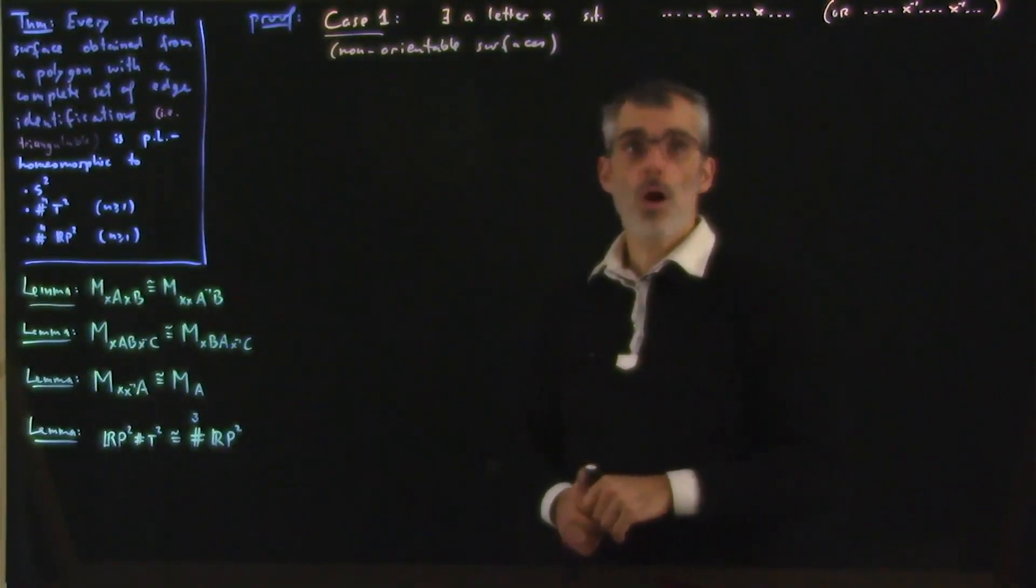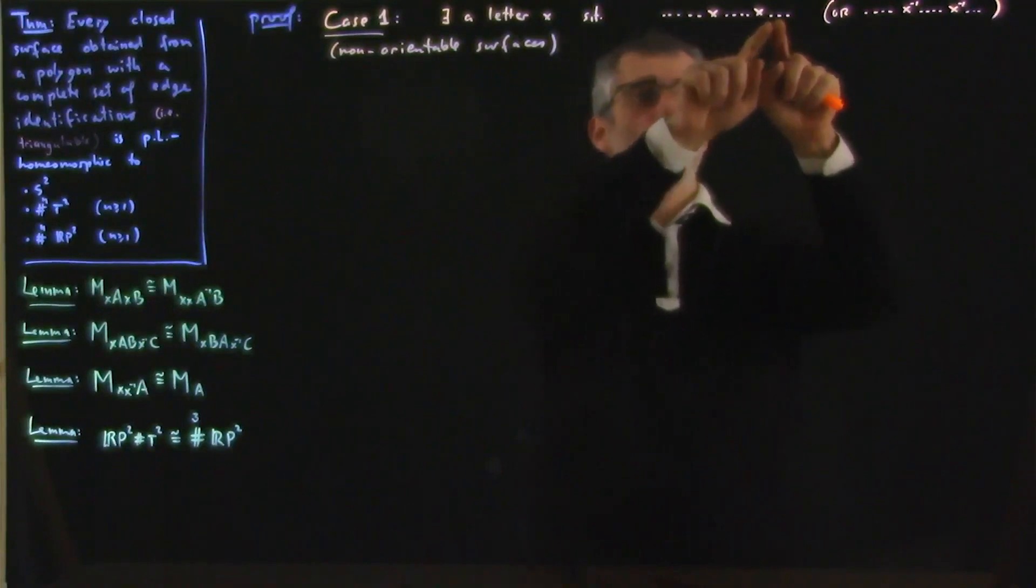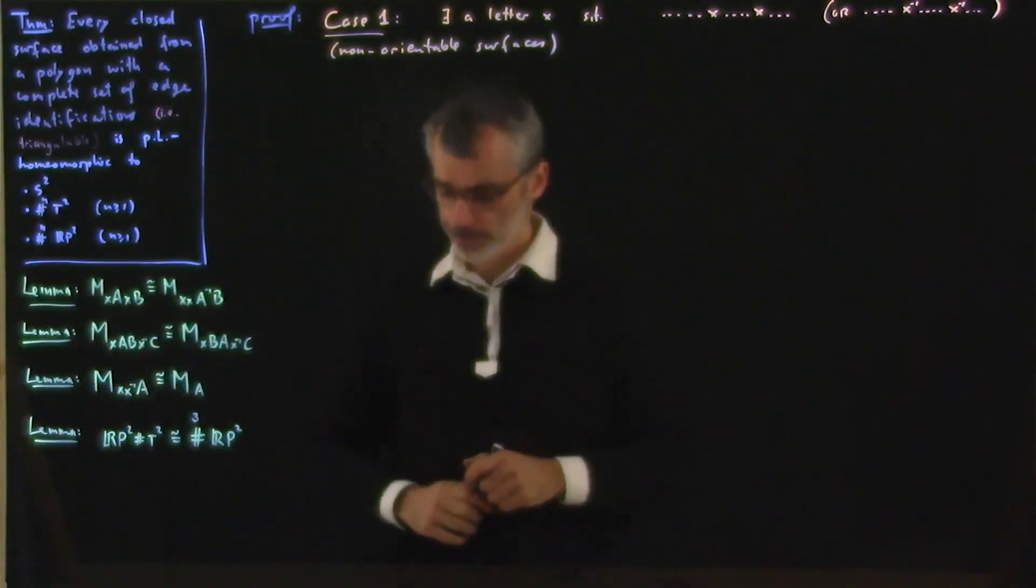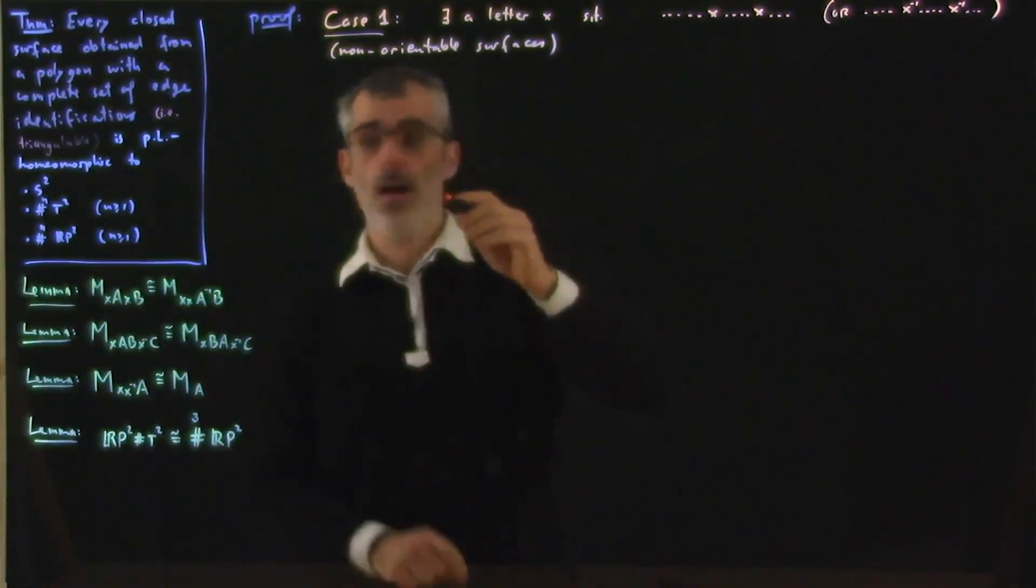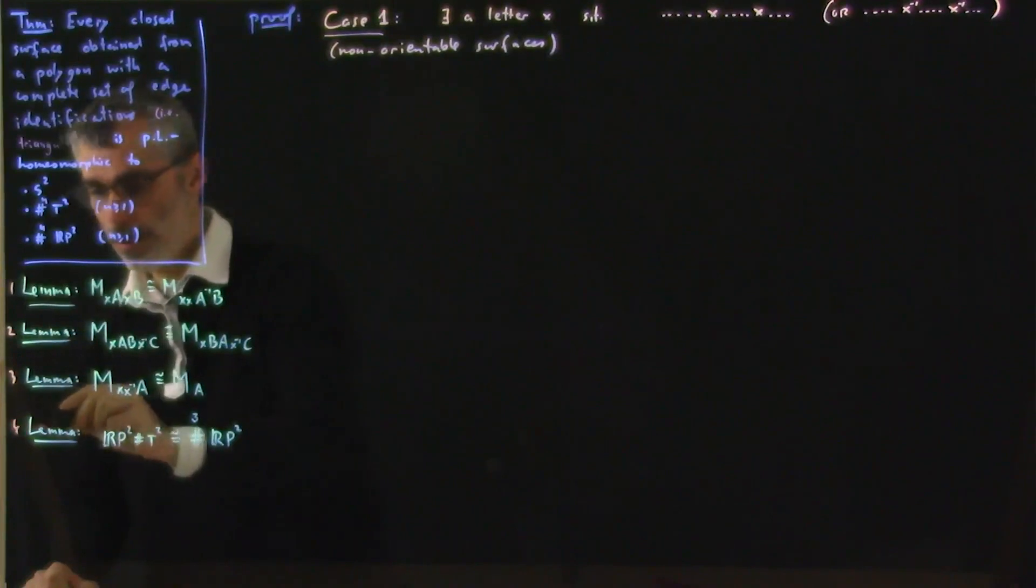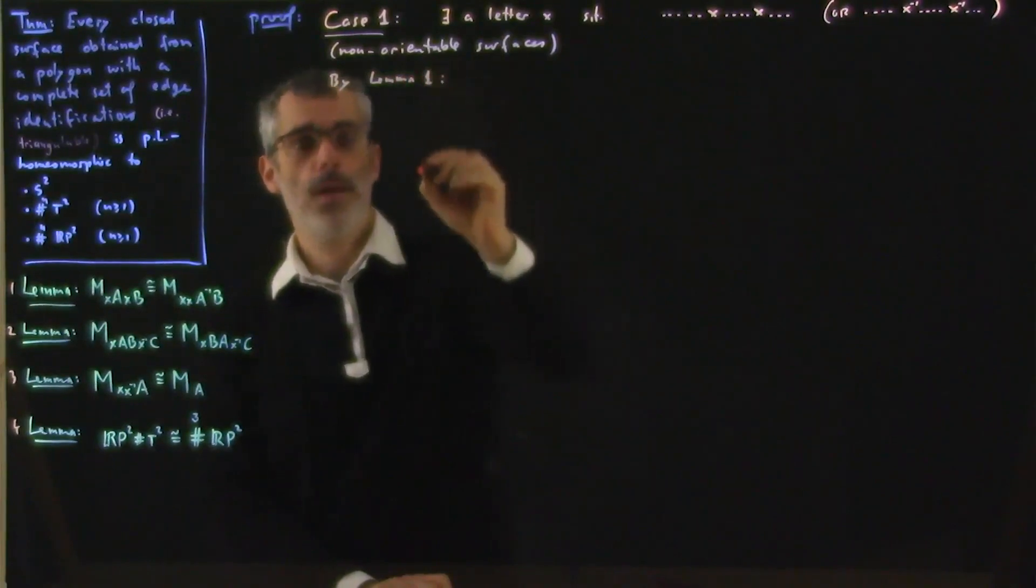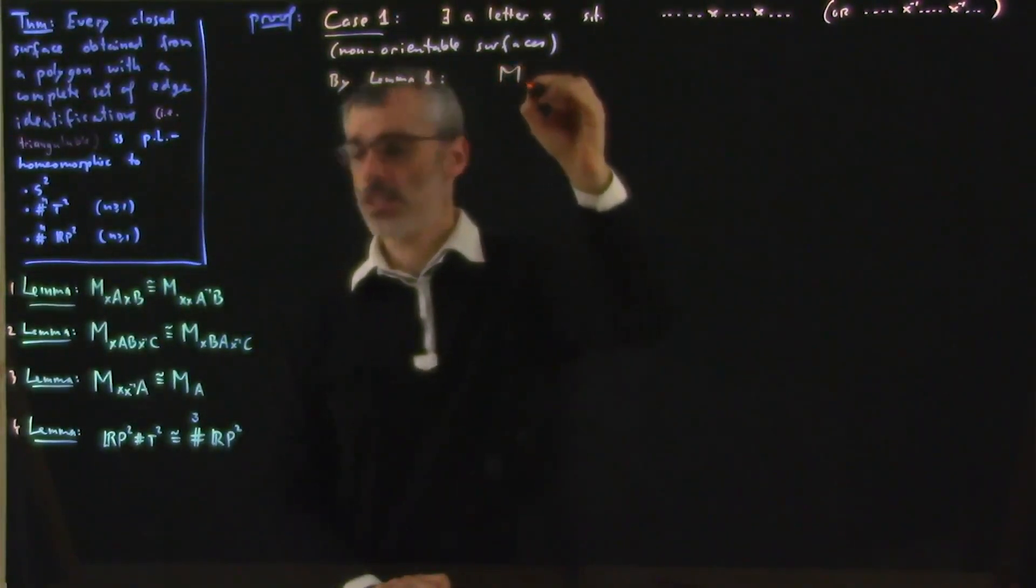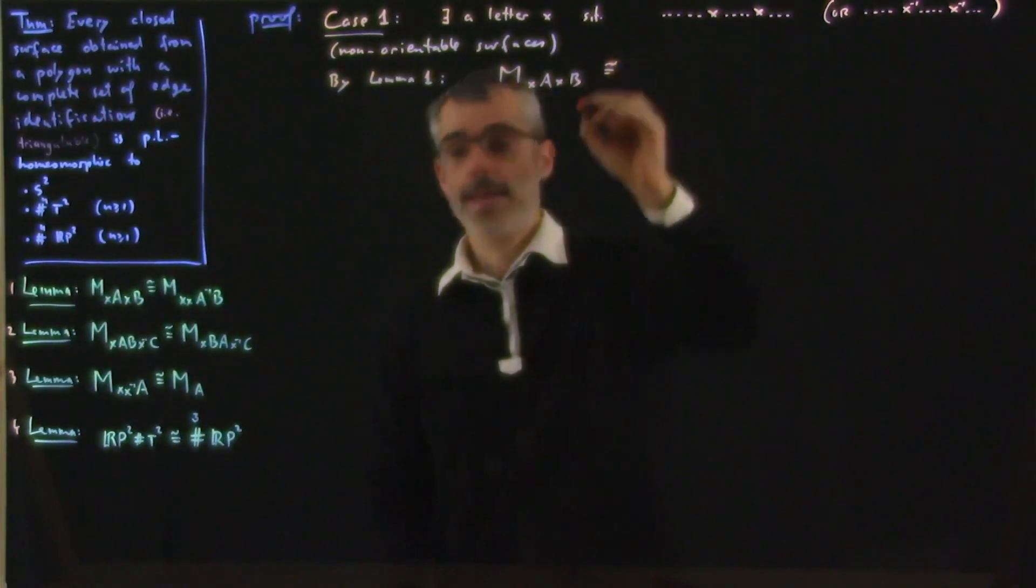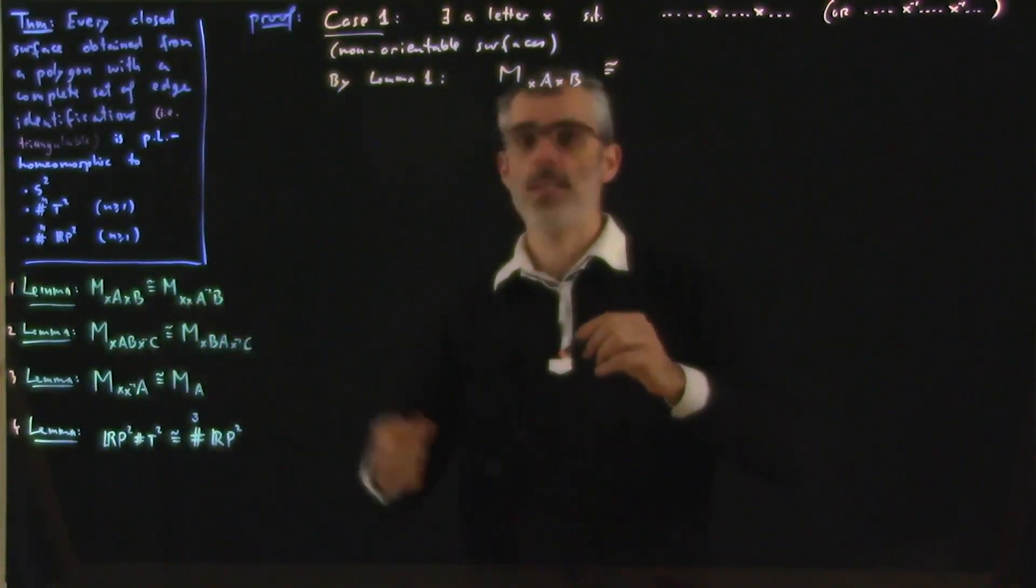Okay, so our word is of the form, so up to cyclic permutation we assume that it starts with an x, so x and then some word and then x and then some other word. So it is exactly of that form, xA, xB. And by this lemma, so let's name these lemmas one, two, three, four. By lemma one, we have that the surface, which is the one we care about, is, okay, so we rewrite it as x, x, and then this thing, and then that's the same thing as a connected sum of RP^2 with some other surface.